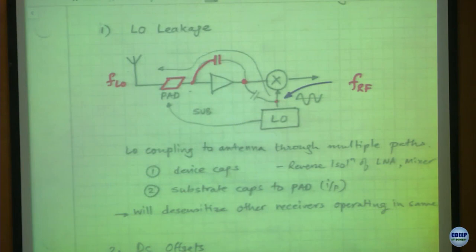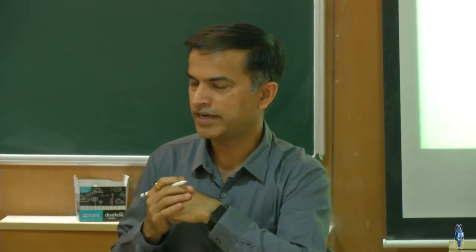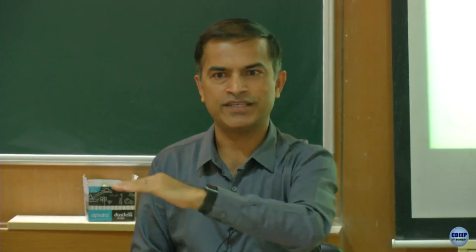The second part of the LO leakage: this LO frequency will go out from the antenna and get reflected from different places, or if you touch the antenna it changes the antenna impedance. It comes back and mixes with itself, giving you a DC output. Since we are doing 0IF conversion, that DC will be right in band. Also, this DC amplitude will keep changing depending upon what reflections you are getting and how you are holding your phone - it is going to change over time.